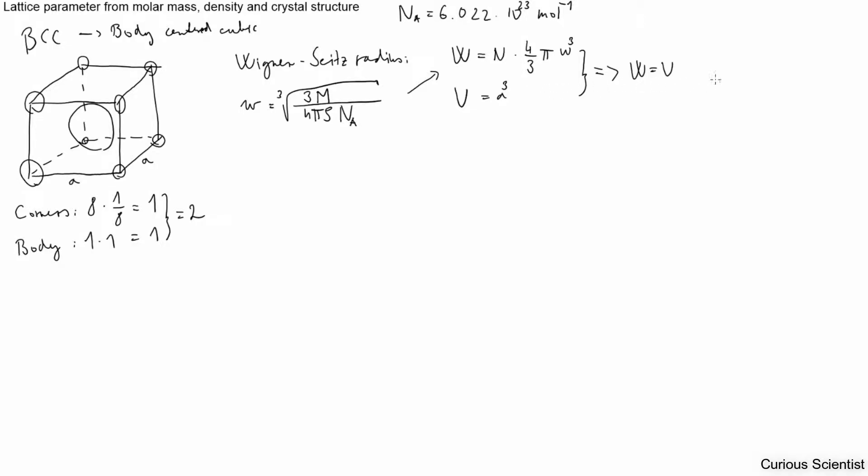It has this formula, A to the third power. And then we equate these two, so W equals V. And then using these two equations we can express A from this, so this will be the lattice parameter. And then we just simply rearrange everything here.